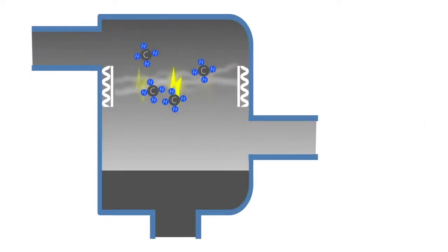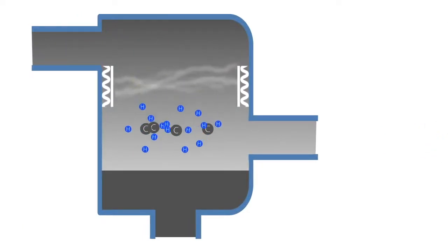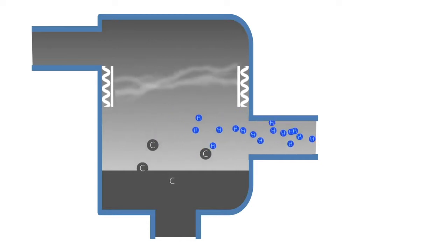Besides the gaseous hydrogen, solid carbon, also known as carbon black, is produced. This has so far only been obtained from the combustion of organic matter.